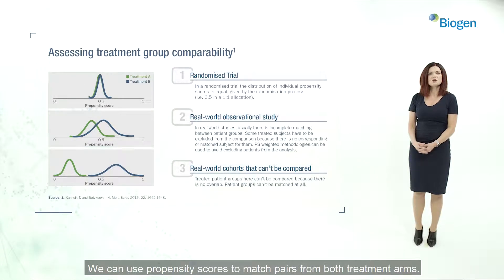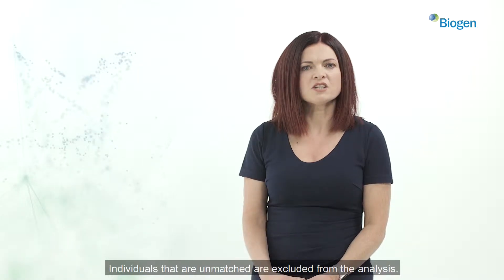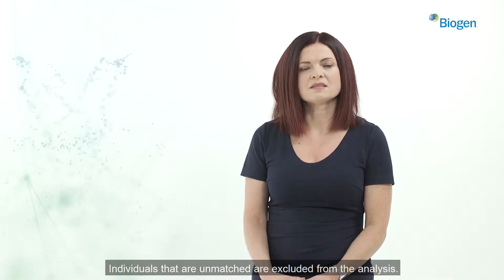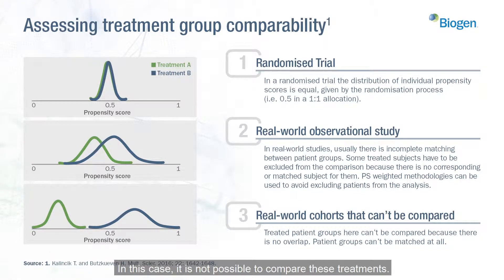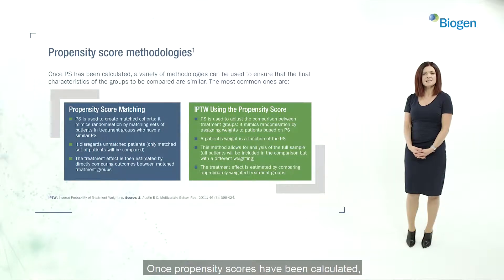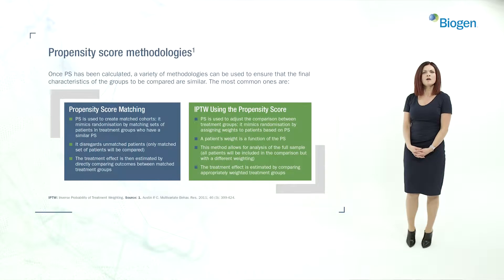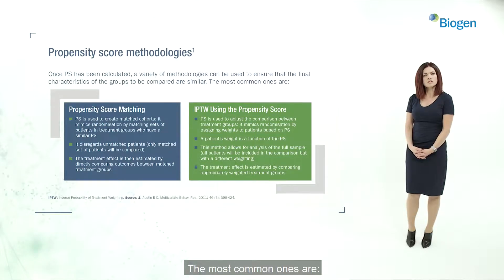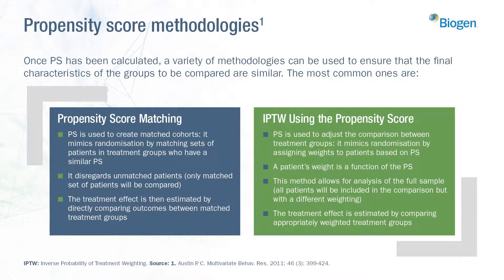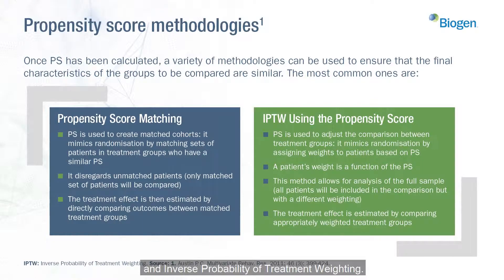We can use propensity scores to match pairs from both treatment arms. Individuals that are unmatched are excluded from the analysis. It is possible that individuals from each group cannot be matched — in this case, it is not possible to compare these treatments. Once propensity scores have been calculated, a variety of methodologies can be used to ensure that the final characteristics of the groups to be compared are similar. The most common ones are propensity score matching and inverse probability of treatment weighting.